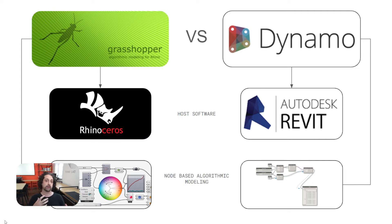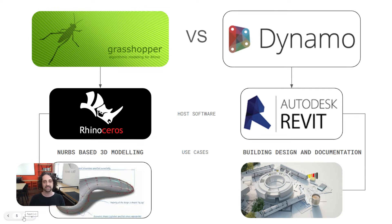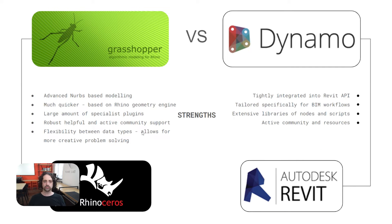In Rhino, we're using Grasshopper to create more complex geometries, whereas in Revit we're usually using Dynamo to drive changes within the BIM environment. Rhino and Grasshopper are all about NURBS-based three-dimensional modeling — complex pieces of geometry — and the way that Rhino resolves geometrical calculations is very different to how Revit would. Revit is a BIM program — building information modeling — and its use case really revolves around building design, documentation, and coordinating that design with other disciplines.